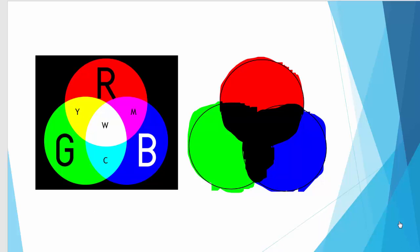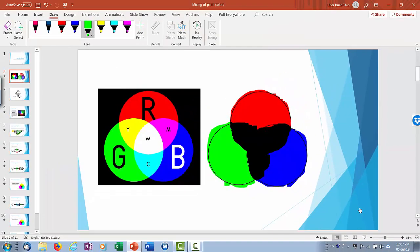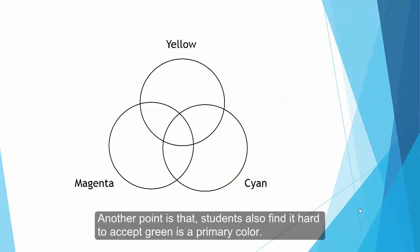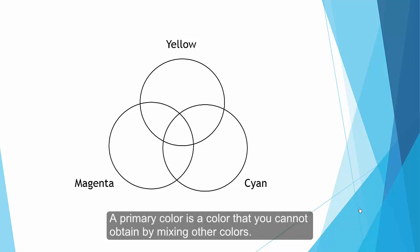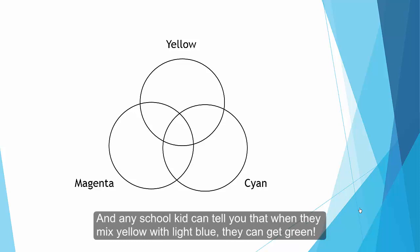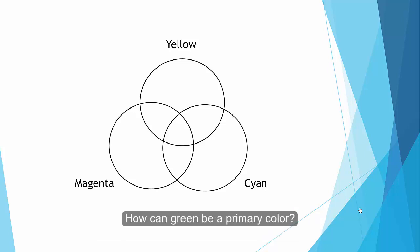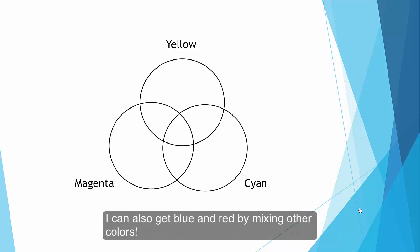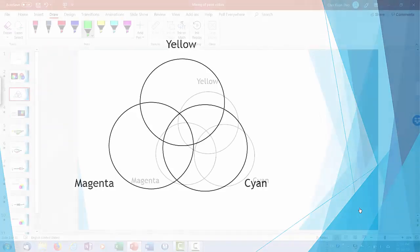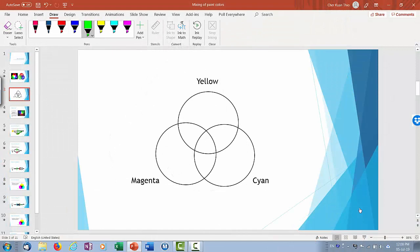In fact, the point is that students also find it hard to accept that green is a primary color. A primary color is a color that you cannot obtain by mixing other colors. And any school kid can tell you that when they mix yellow with light blue they can get green. How can green be a primary color? In fact, I can get blue and red by mixing other colors too. So again, how can red and blue be primary colors? This is a demo. In this case we are going to mix yellow with cyan, which is light blue.